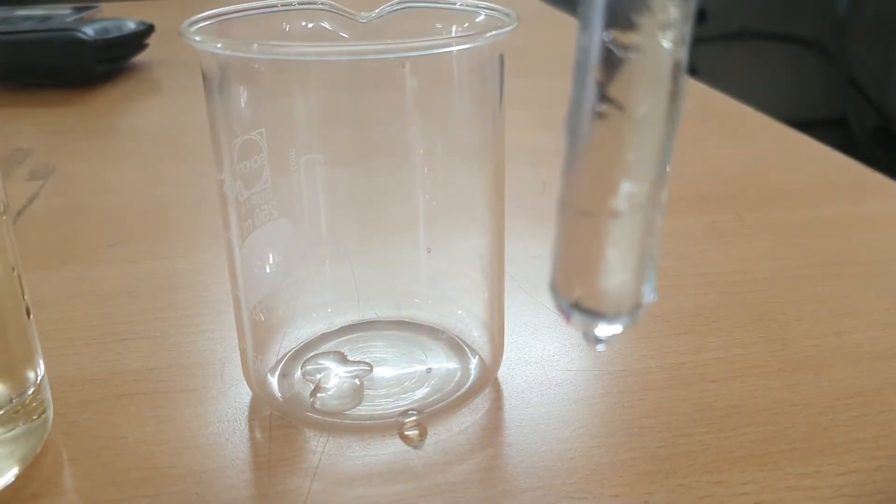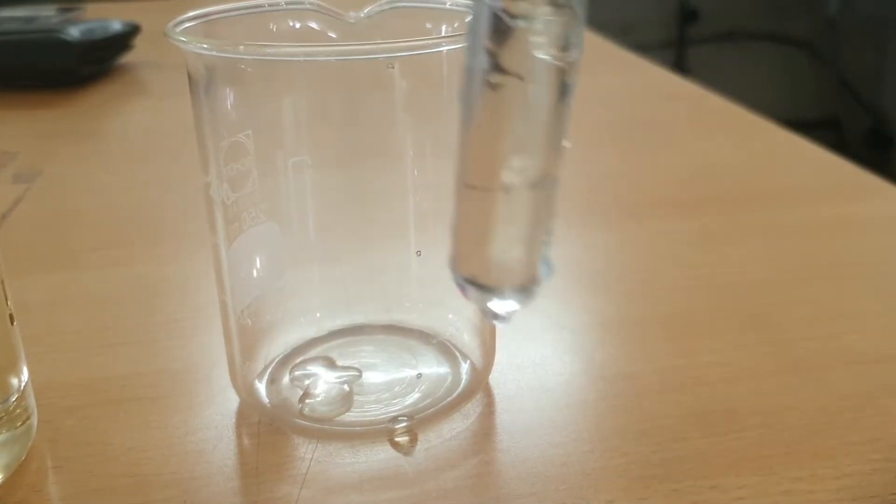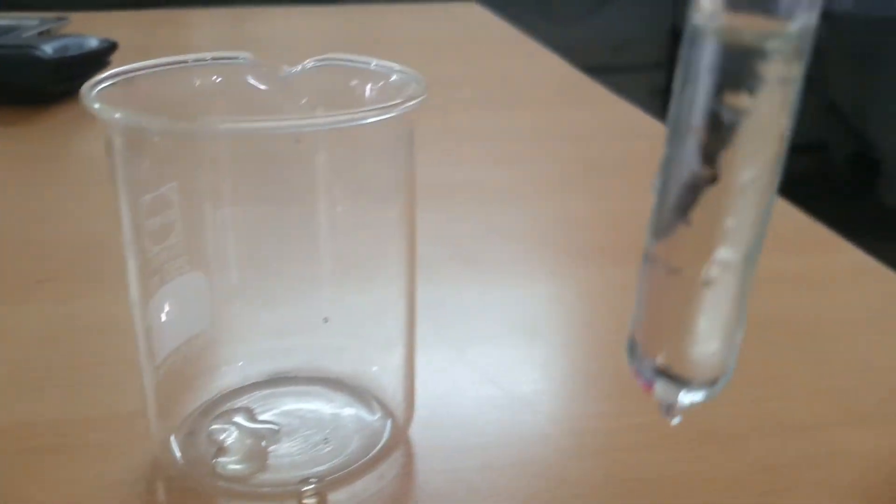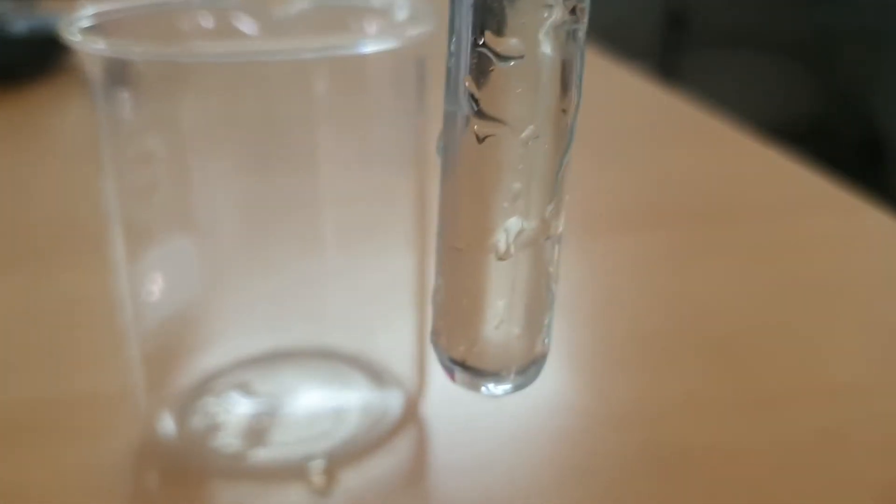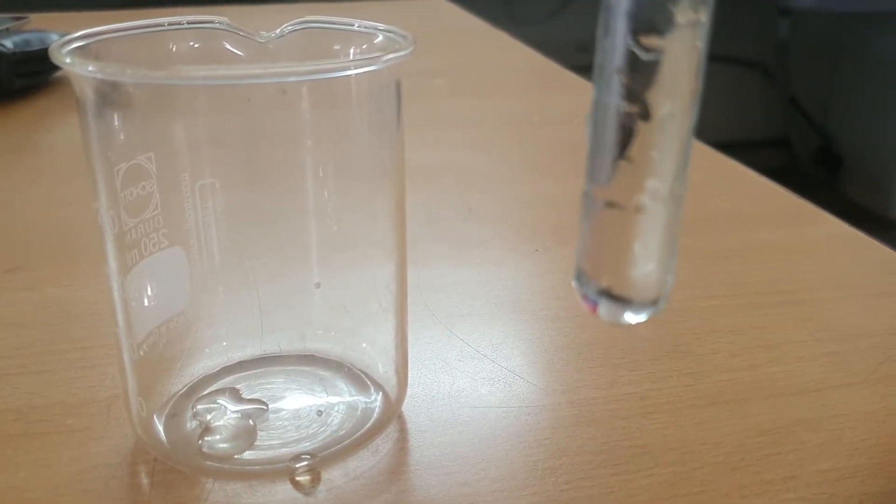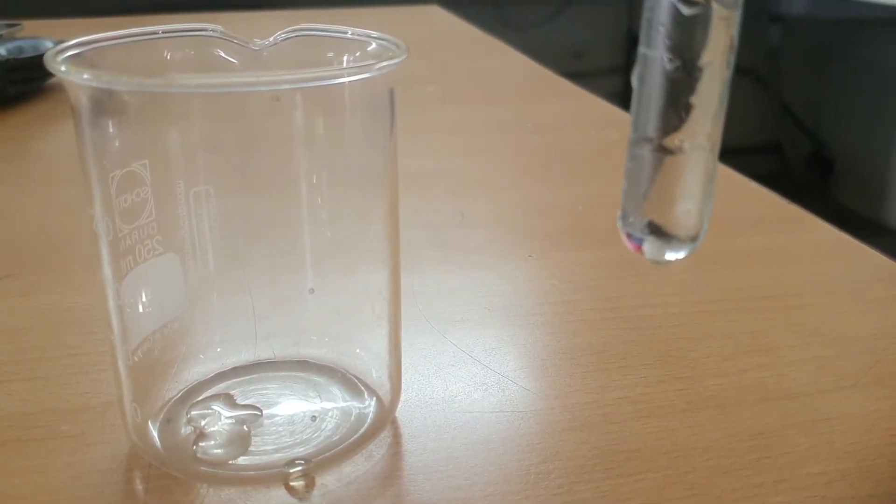This is behaving like a liquid lens of glycerin. You can see the images of objects which are far apart from the test tube. The images are inverted. You see this is forming the image.